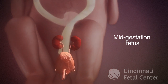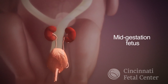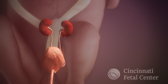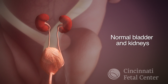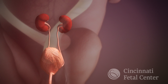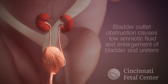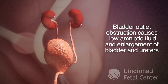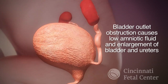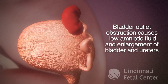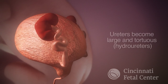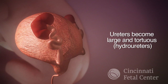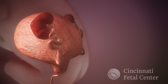The simulation begins showing a mid-gestation fetus with normal bladder and kidneys. When the fetus has bladder outlet obstruction, this causes low amniotic fluid. The ureters, over that time, become large and tortuous. This is called hydroureter.